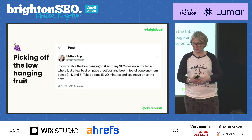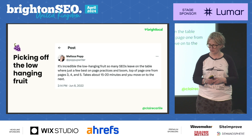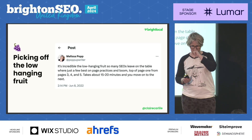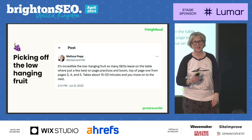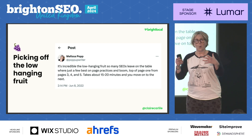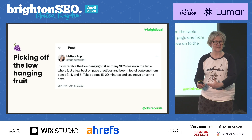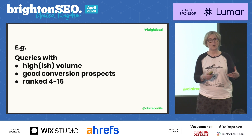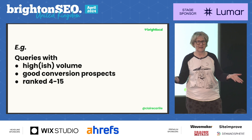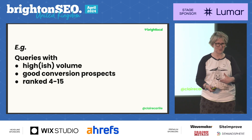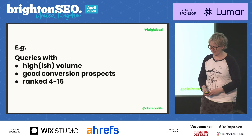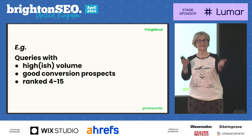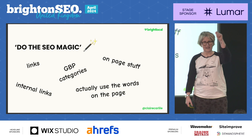A note on disambiguation issues: if you're calling your business something like 'Sexual Harassment Attorney,' Google doesn't see you as a brand, so separating branded and non-branded search terms doesn't really work. And for low-hanging fruit — which is something SEOs love — look at queries where you have visibility but could have more if you just went ahead and optimized. High volume doesn't need to mean massive; it just needs to be high enough to make a difference to your business. We're looking for good conversion prospects ranked four to fifteen, outside the three-pack, where we'd like more visibility.